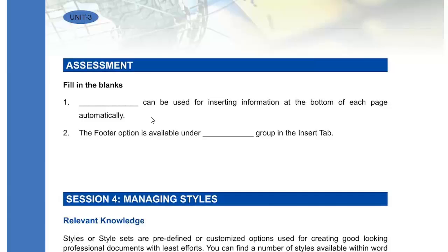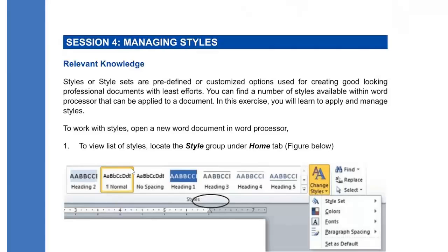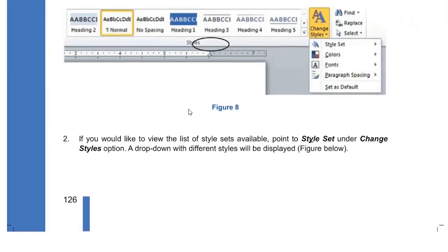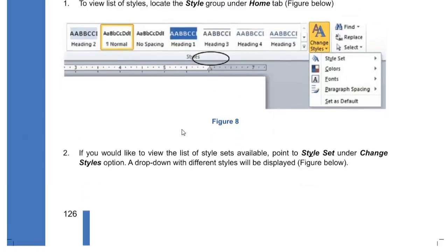Now you have managing styles. In the ribbon section you also have Styles — you can insert styles. Styles or style sets are predefined or customized options used for creating good-looking, professional documents with the least effort. You can find a number of styles available within the word processor that can be applied to your document. These are like templates — you can just select among them and they will be implemented on your document.